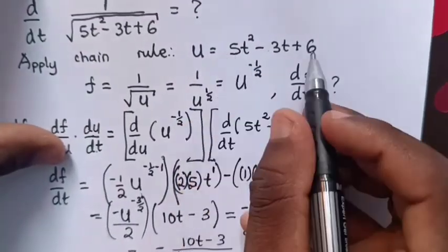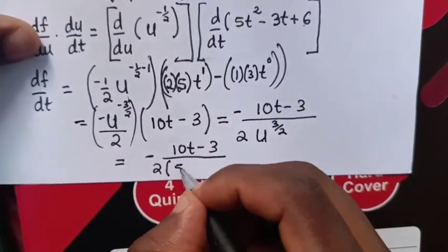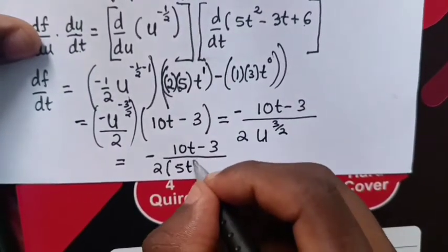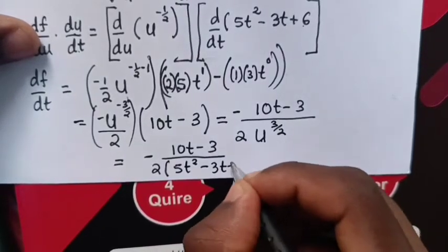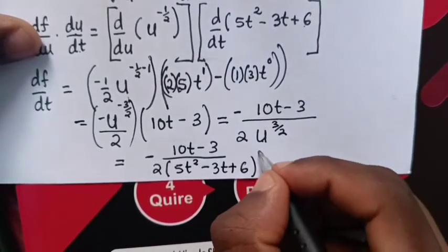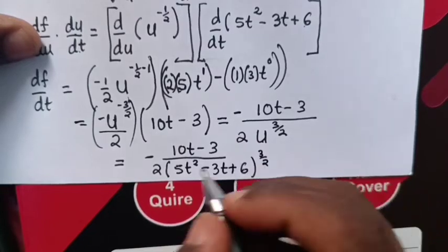Remember, you will let this as 5t² - 3t + 6 power of 3 over 2.